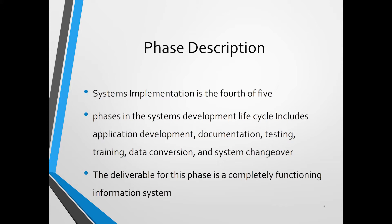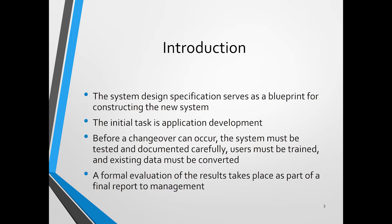This is the system implementation module — we are now moving to the fourth phase of the five phases in the system development life cycle. System implementation includes application development, documentation, testing, training, data conversion, and system changeover. At the end of this phase, the deliverable is a completely functioning information system ready to be launched to users. The specifications from the system design phase serve as a blueprint for constructing the new information system.